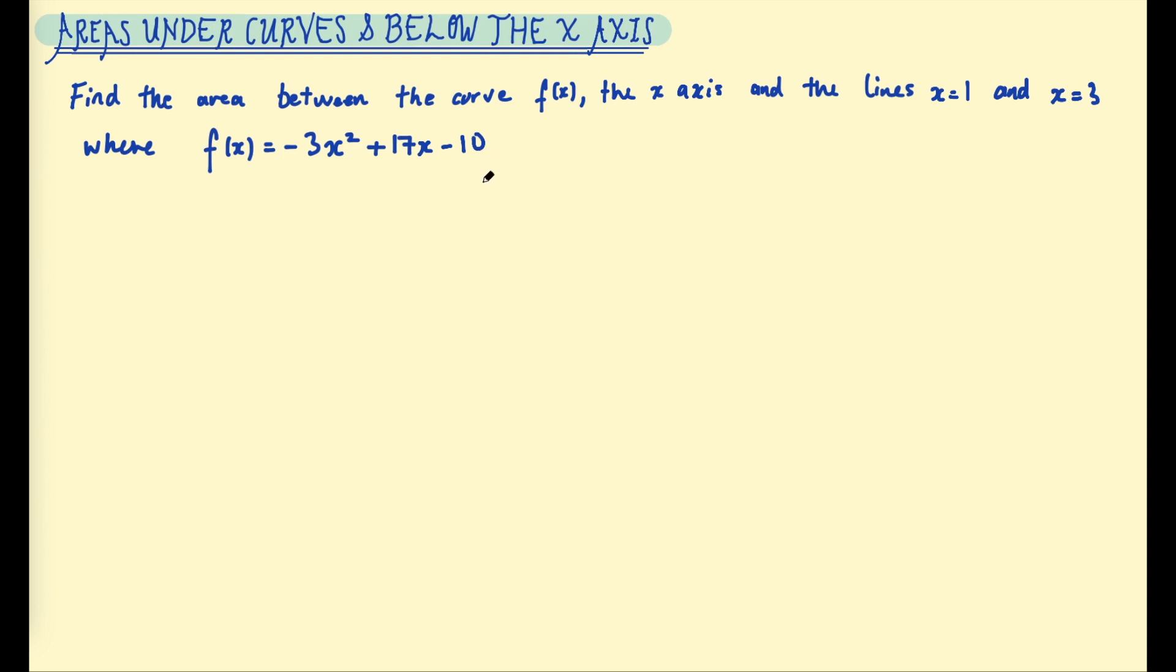To sketch this curve we want the roots. To get the roots we want to factorize. I might factorize a negative 1 out first just to make it easier. So this becomes the following, plus 10 on the end, and then I'm looking for factors of 10 and 3 that make 17. The only factors of 3 are 3 and 1, so they must be 2 of the factors we choose, and then if we pick 5 and 2, and if they're both negatives we get negative 17. Then we can sketch the curve.